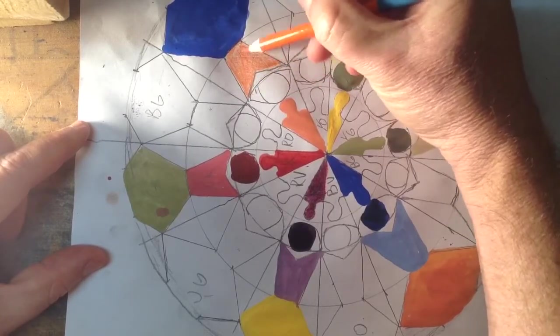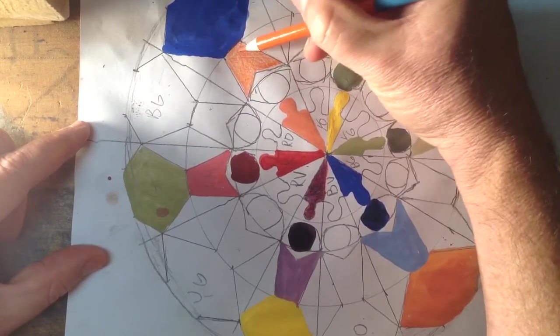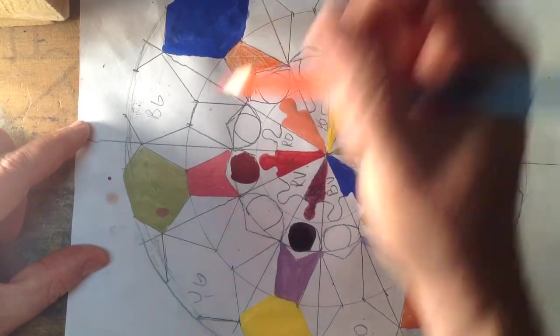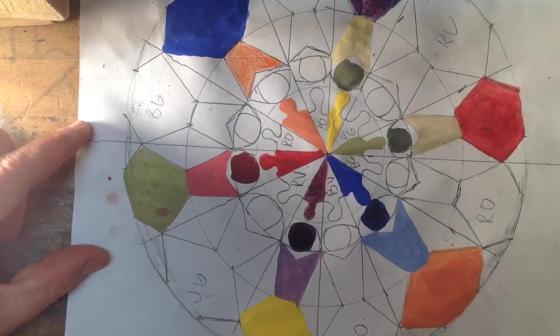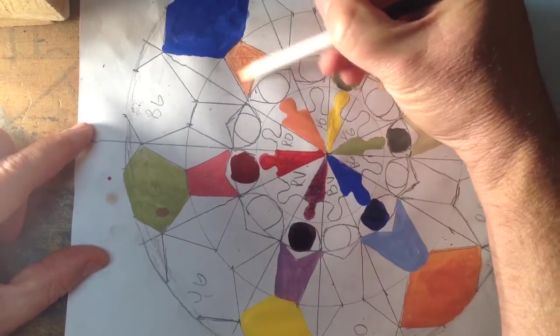There are even some companies out there that make a watercolor colored pencil that once you color it on, you can use water on it to make it like paint. So those are pretty cool. Alright, so my orange is down. I'm going to take my white and go over that and see if I can change it to more of a tint.